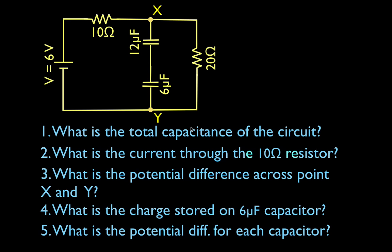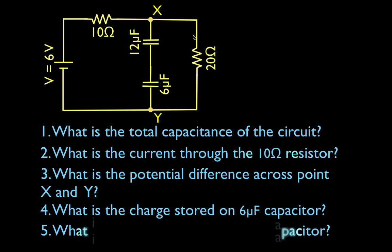We're going to do this from the perspective that the circuit has been closed and running for a long time — time equals infinity. If we had a switch, we close the switch. The circuit has been turned on. Basically what that means is that the two capacitors are fully charged, and the current continues to run through the outer branch of the circuit.